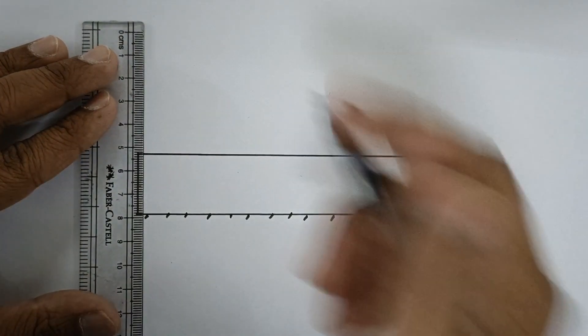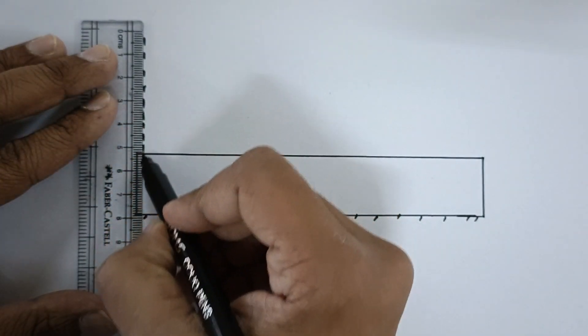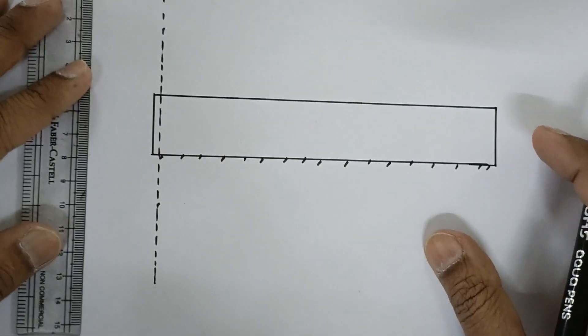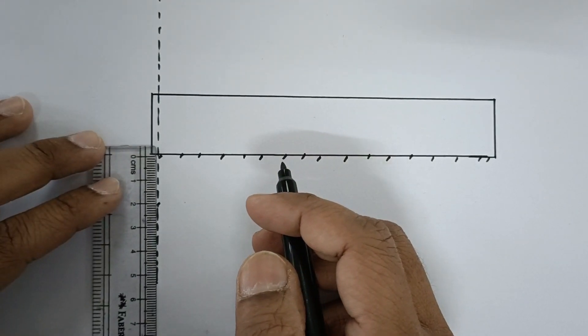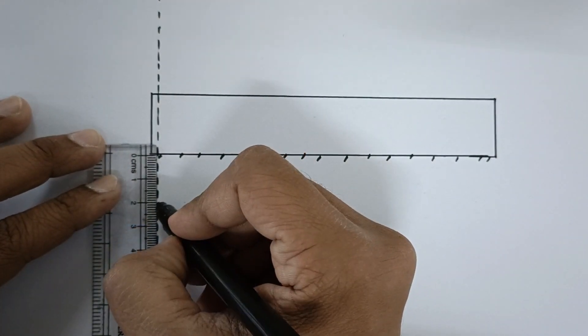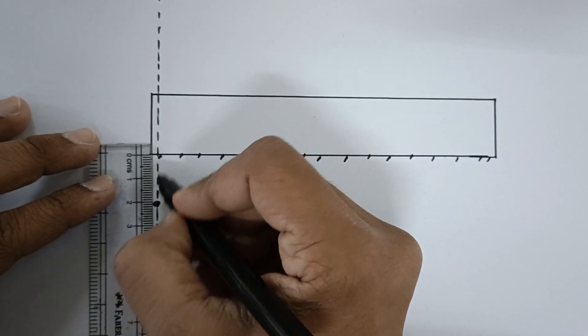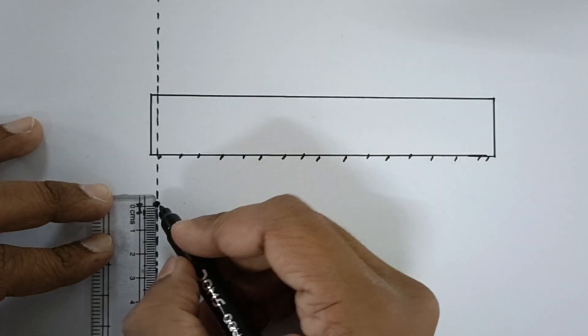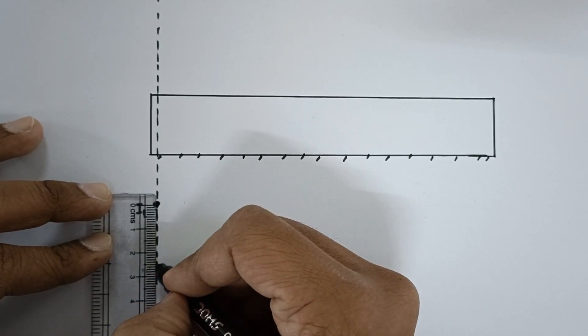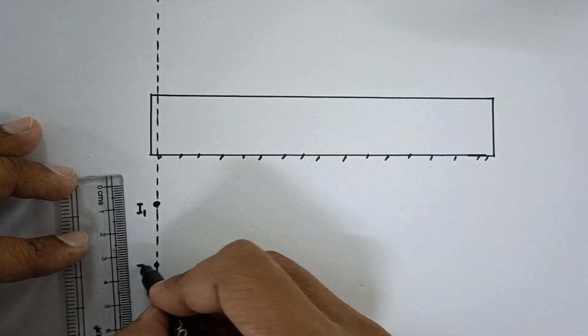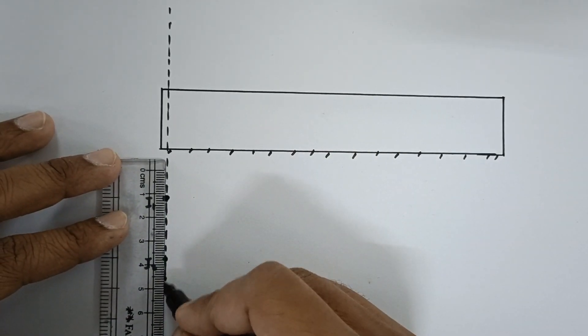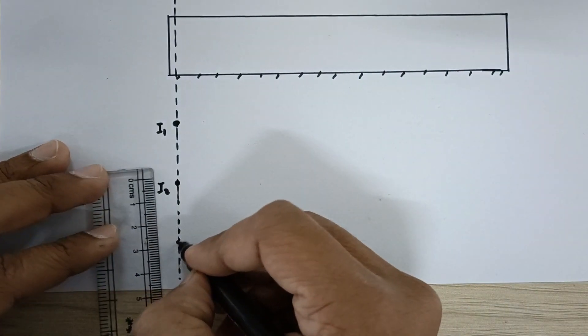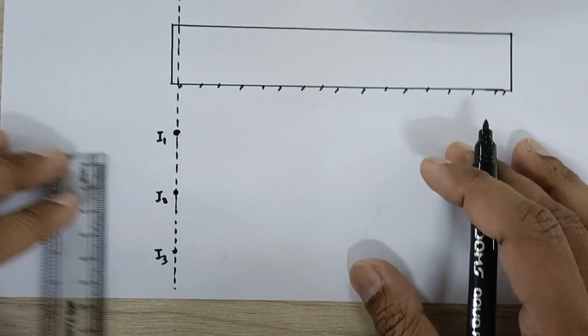Now draw a straight line perpendicular to the mirror, it should be a dotted line. Now I am going to place the first image approximately 2 centimeters from this surface. So this is my first image I1, and again from here 2.5 centimeters. This is the second image I2. Again 2.5 centimeters here, I have another image I3.